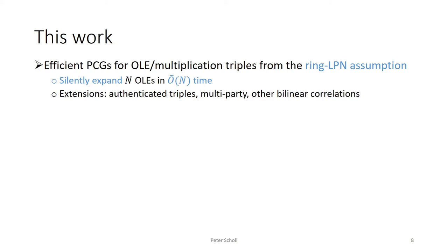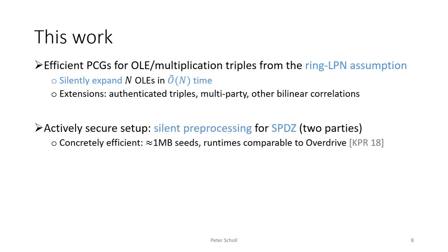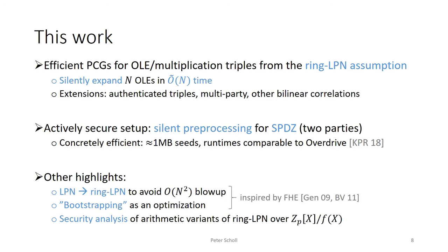We also present several extensions and variants for authenticated triples, multi-party triples, and other bilinear correlations such as matrix triples. We present secure protocols for setting up the seeds of these PCGs with active security. In particular, for our two-party PCG for authenticated triples, this implies a silent pre-processing protocol for the SPDZ multi-party computation protocol. This protocol has very good concrete efficiency: the size of each party's seed can be as small as around a megabyte, and the runtimes for expanding the seeds are comparable to the overdrive protocol, which is a non-silent protocol based on homomorphic encryption. Some of our techniques were inspired by work on fully homomorphic encryption using ring LWE, including a method for switching from LPN to ring LPN to avoid a quadratic blowup, and a bootstrapping-style technique to optimize secure seed generation.